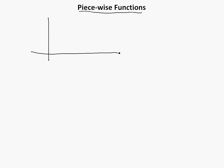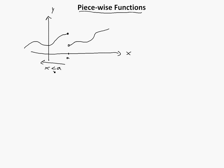I'll give you a general example of just what piecewise is. Let's say we have a regular graph with x and y axes, and then a random curve here, and this one is a circle there, and then it breaks up to here. As you can see, this is piecewise — meaning that when this is for x less than or equal to a, there's a circle here.